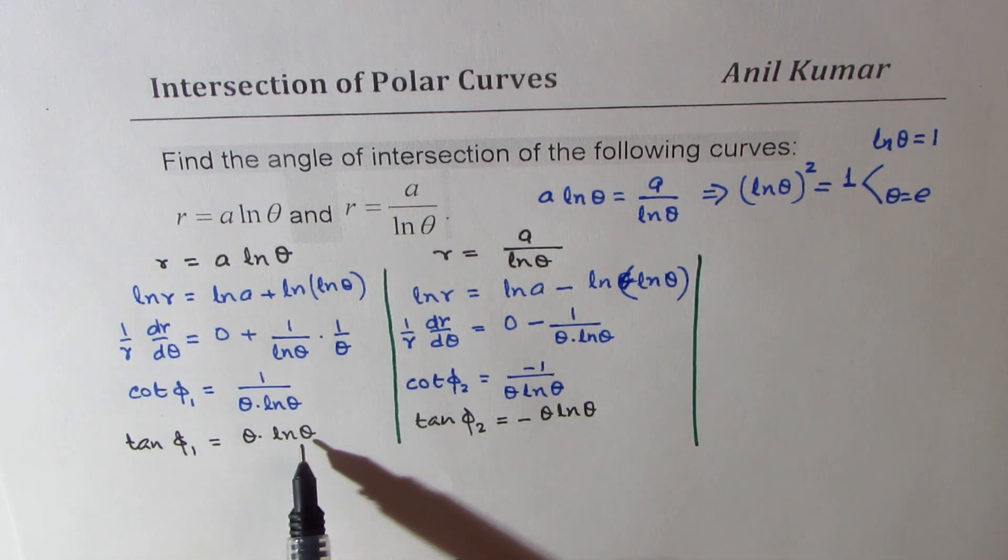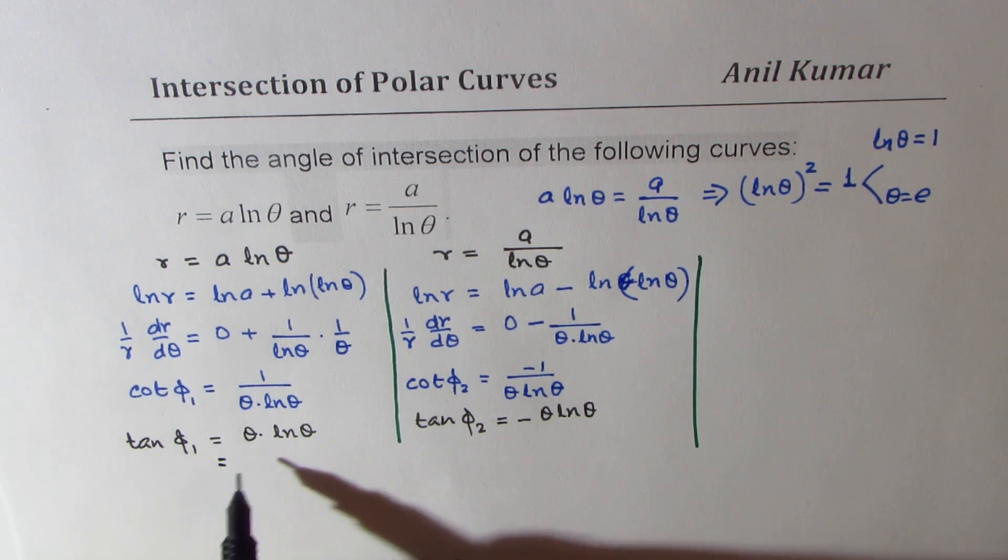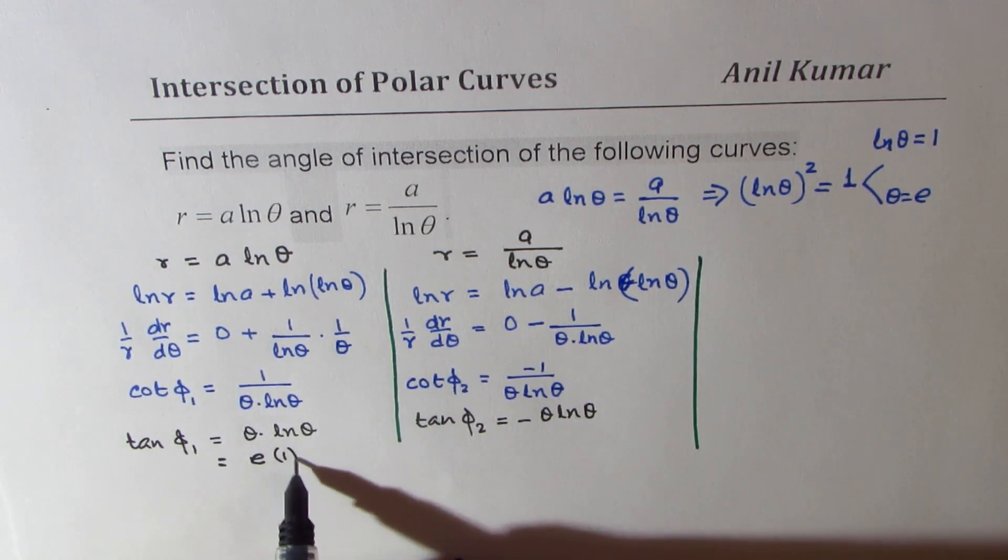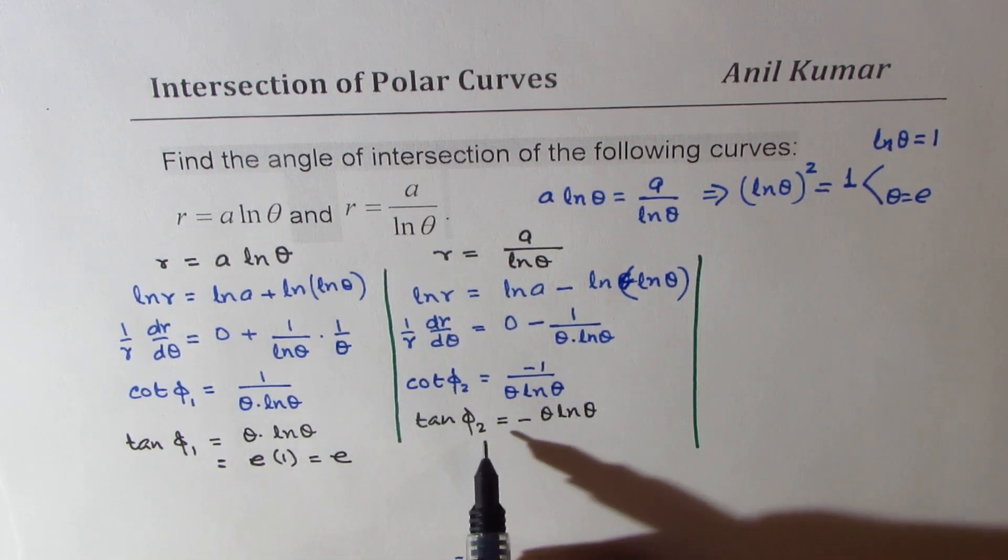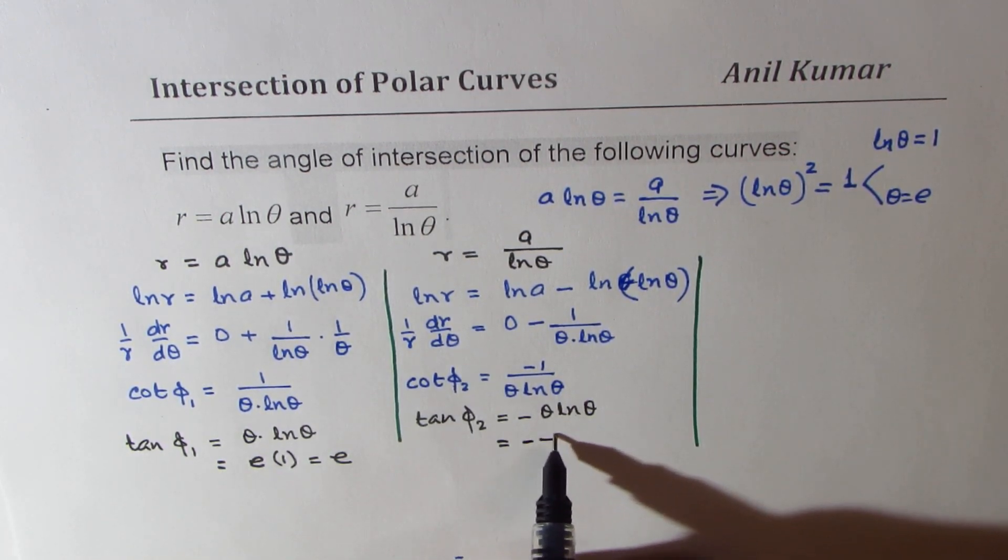So ln theta is 1 and theta is e. So we get tan of phi 1 as e times 1, which is e. And tan of phi 2 is minus e.